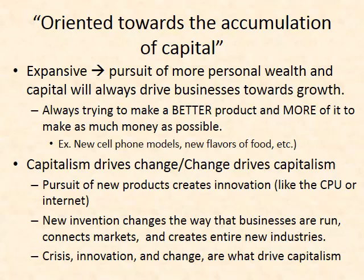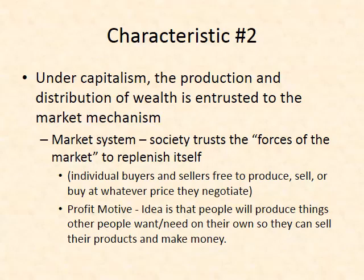The weird thing about capitalism is that crisis is what drives it — because crisis always leads to change, which in capitalism is a good thing. The second characteristic is that the production and distribution of wealth is entrusted to the market mechanism. We rely on individuals to make free choices to produce and sell or buy goods at prices they agree to. The profit motive says people are going to produce things other people want and need so they can sell them and make money. The farmer is going to grow food because he knows people like me are going to buy it — the government doesn't tell farmers to grow food; farmers choose to because they believe they can sell it.